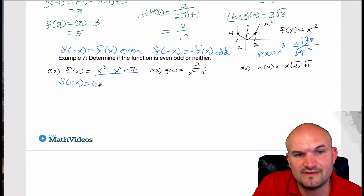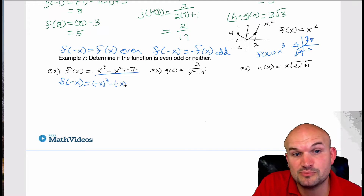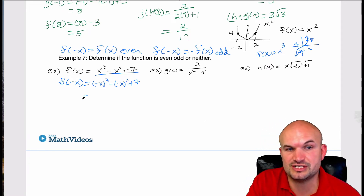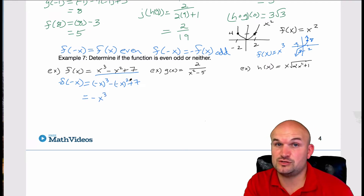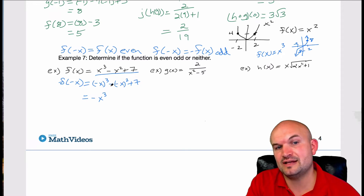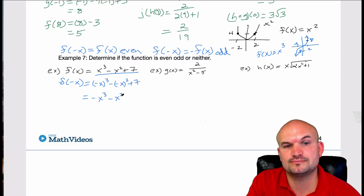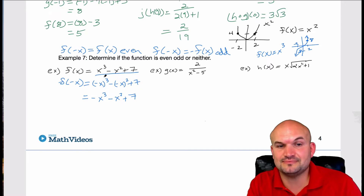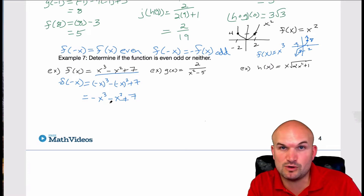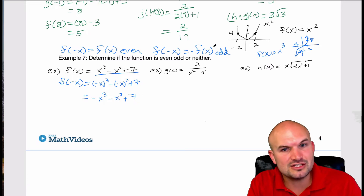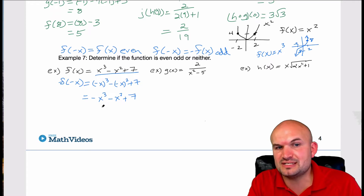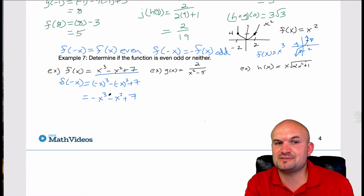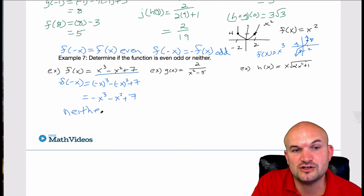If I plug in negative x, I get (−x)³ − (−x)² + 7. Well, (−x)³ is negative x cubed. (−x)² is positive x squared, but then it's being multiplied by a negative, so that gives negative x² + 7. Now we compare — and it's not just the values but also the signs. This is not the same function, so it's not even. It's also not the opposite, because only one term has the opposite sign. Therefore, this is an example of a neither function. The function has no symmetry.